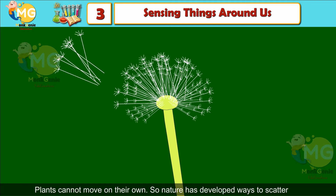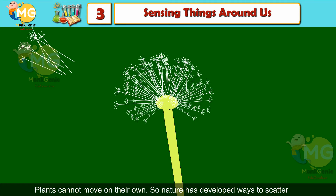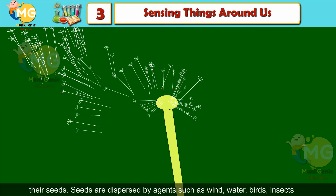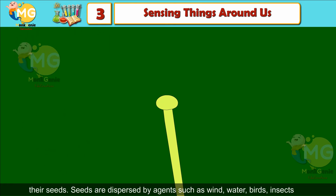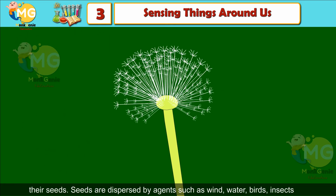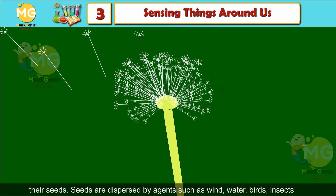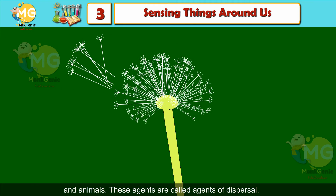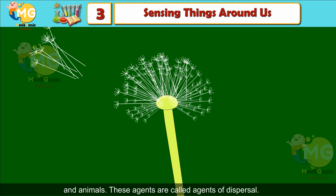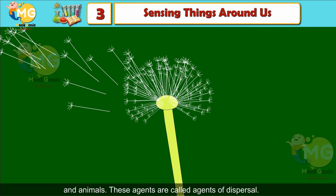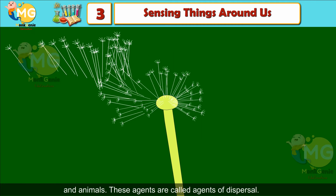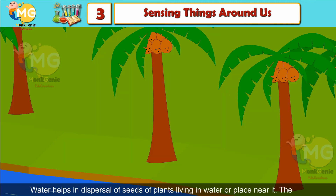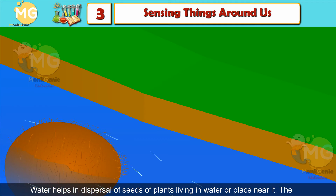Dispersal of seeds: plants cannot move on their own, so nature has developed ways to scatter their seeds. Seeds are dispersed by agents such as wind, water, birds, insects, and animals. These agents are called agents of dispersal.